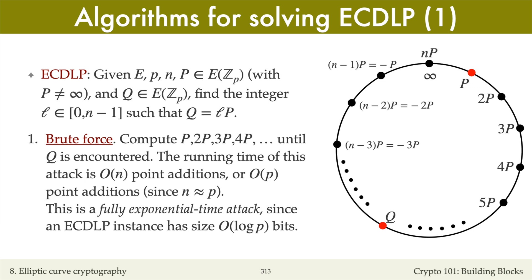In the worst case, the attack takes O(n) point additions, or O(p) since by Hasse's theorem, n is roughly equal to p.